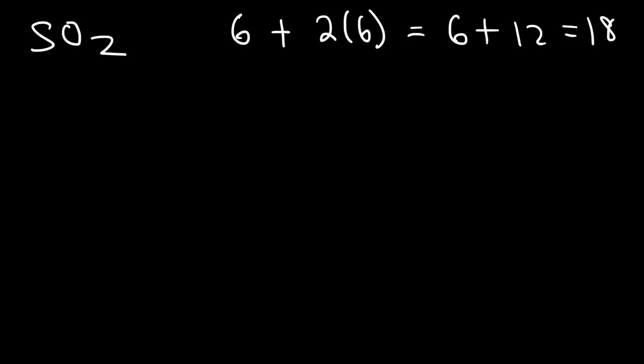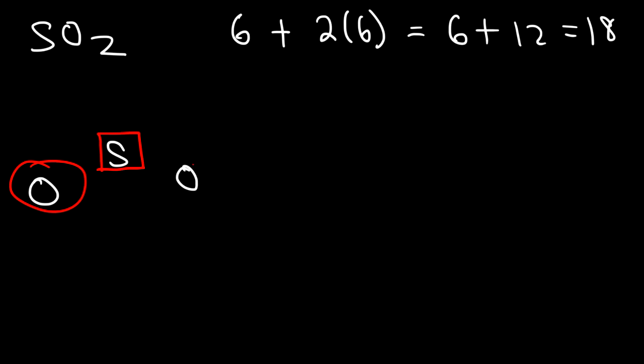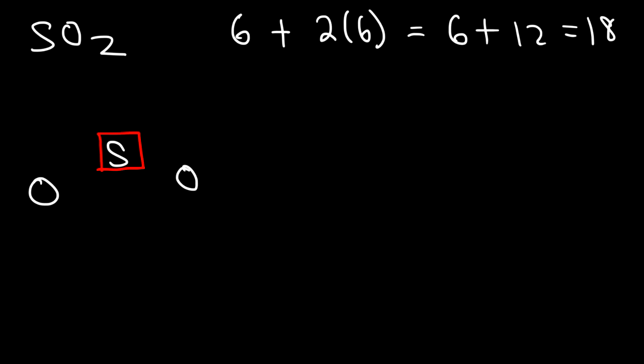Sulfur is going to be the atom in the middle, so sulfur is the central atom. We have two atoms attached to the center atom. If you have a total of three atoms, then n is two. If you have a total of four atoms, n is going to be three. So n is always one less than the total number of atoms.